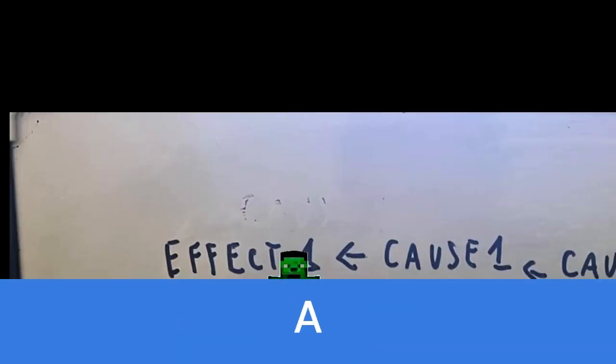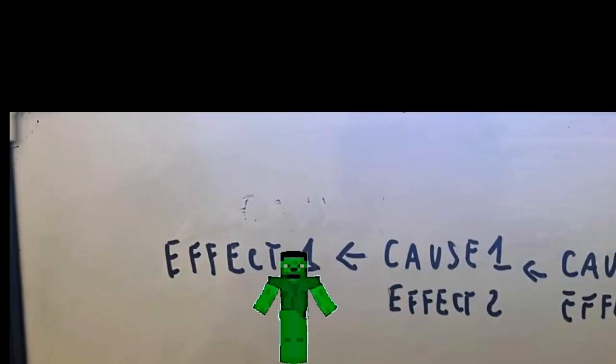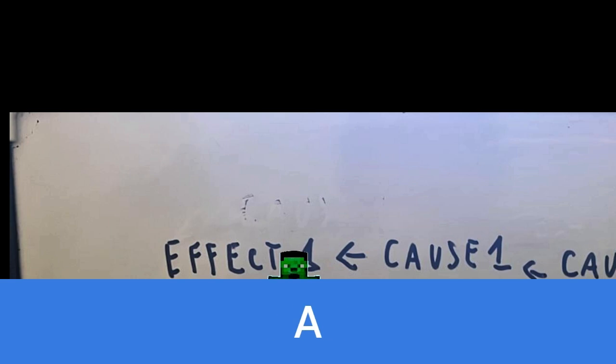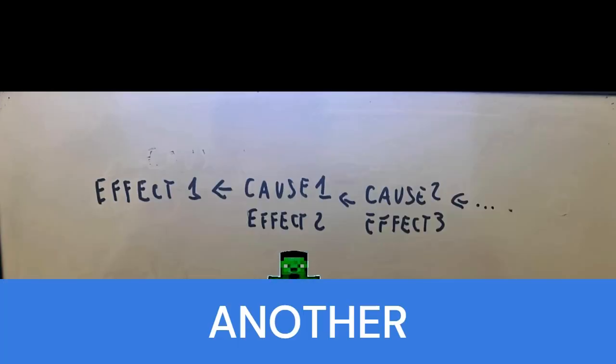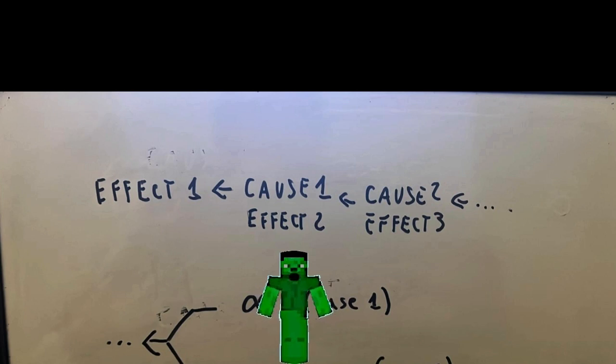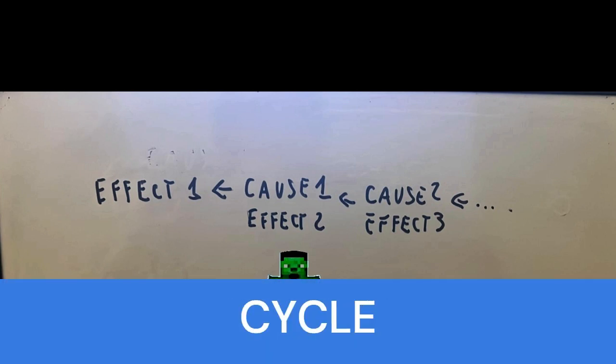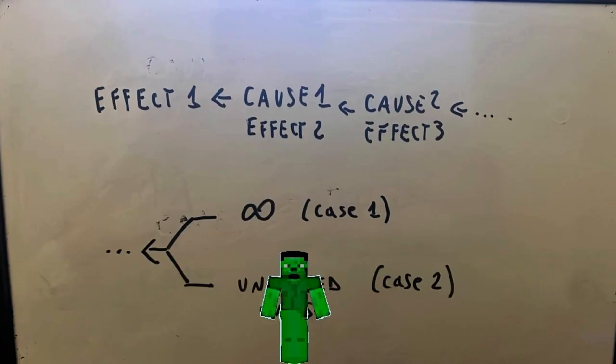Everything has a cause. If we consider anything, it has a cause. The cause of this thing is in turn an effect of another cause. We therefore have two possibilities: one, we can go on in an infinite cycle of cause and effect, or two, there is a cause that caused everything but it has no cause.